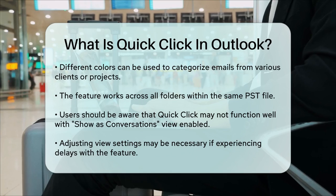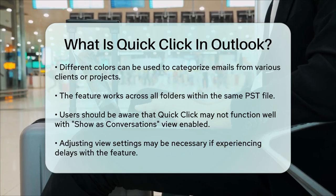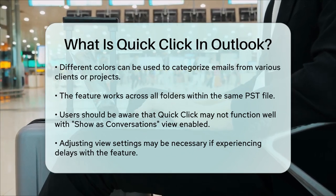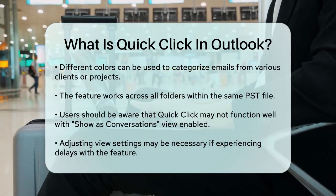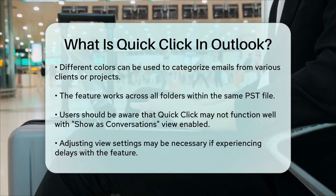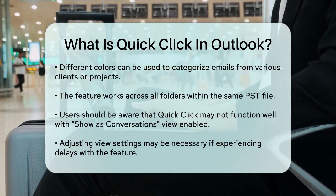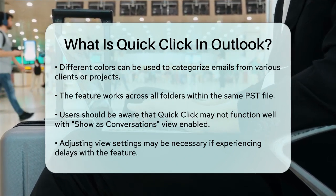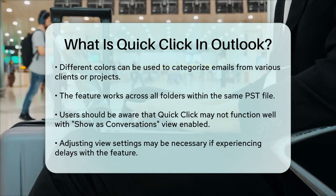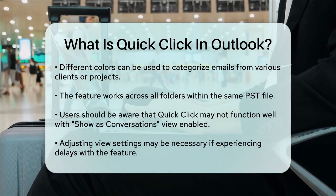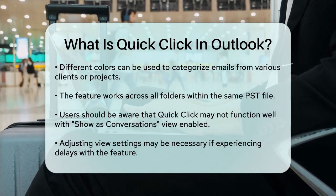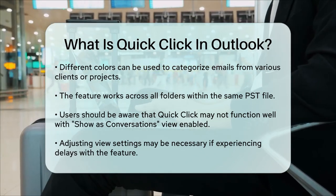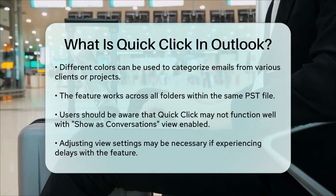In summary, Quick Click in Outlook is a simple yet powerful tool that helps you manage your emails more efficiently by allowing you to categorize or flag them quickly. By setting it up correctly, you can streamline your email workflow and keep your inbox organized with minimal effort.